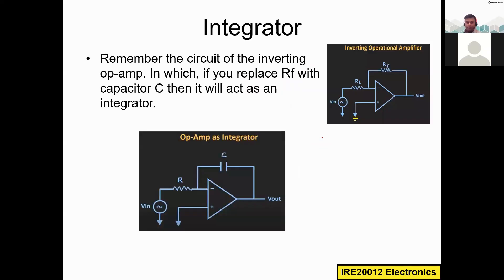We will move to the integrator now. Remember the inverting operational amplifier circuit. Here is the circuit of the inverting op-amp we had seen just before: we have an input resistor given to the negative input terminal, and we take a fraction of the output through the feedback resistor to the same negative terminal. We are going to replace this feedback resistor with a capacitor.